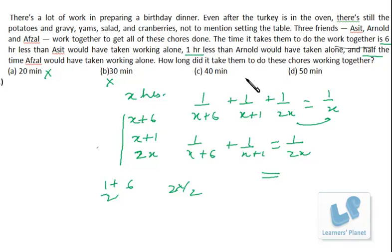Now if I take 40 minutes, it will be 2/3 hour. Suppose I put 2/3 over here. So what I'll be getting: 6 threes are 18 plus 2 is 20. So now the denominator is coming a decent value. So let's just put 2/3 and see whether the left-hand side and right-hand side are matching or not.